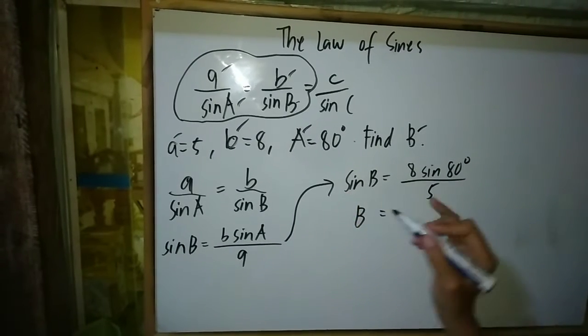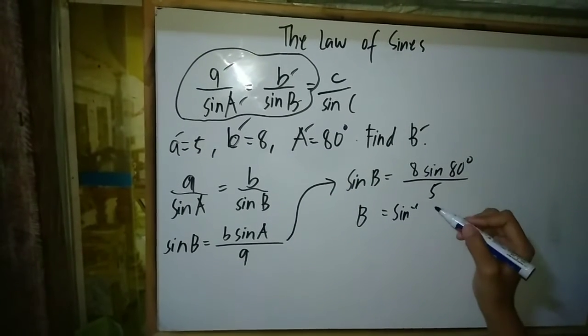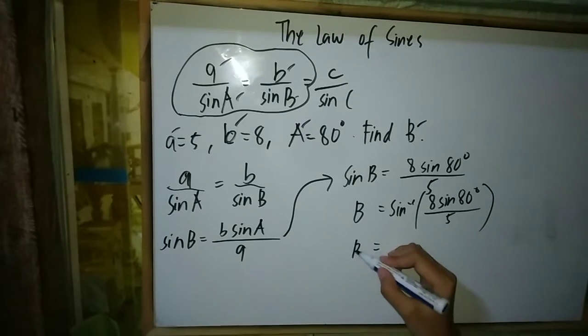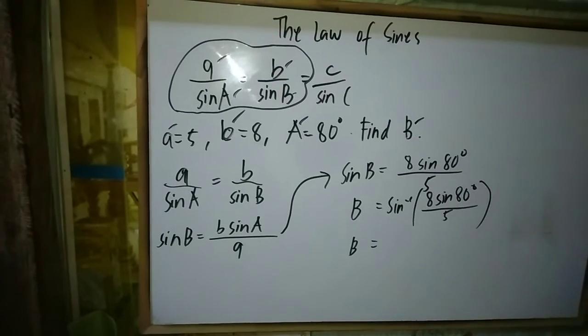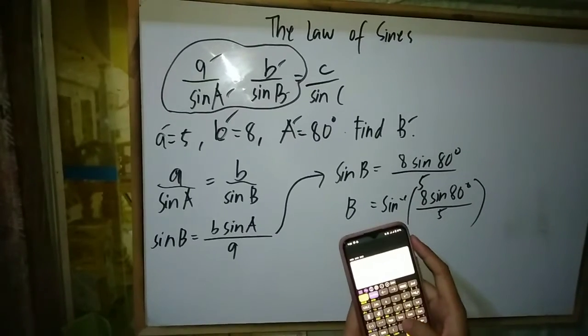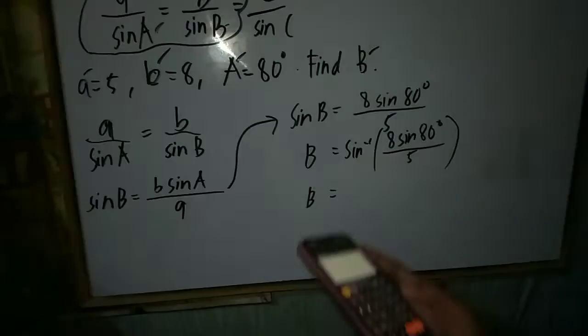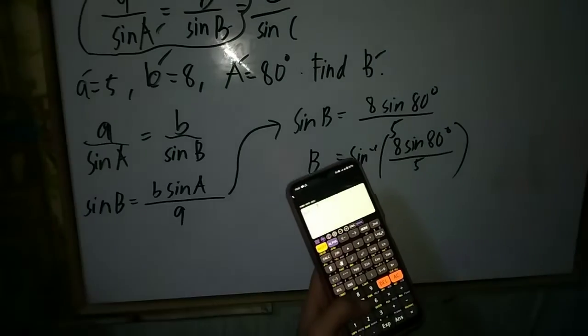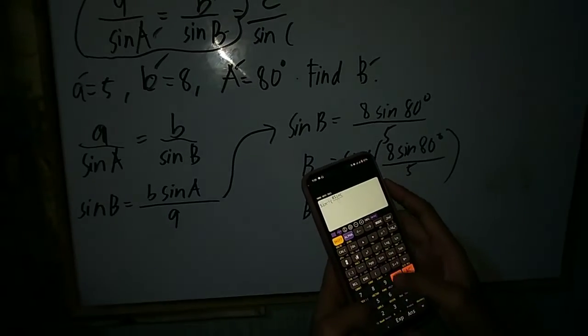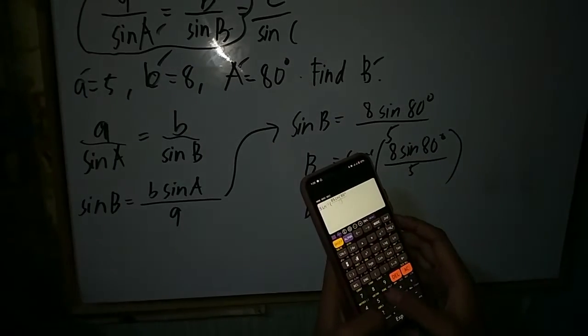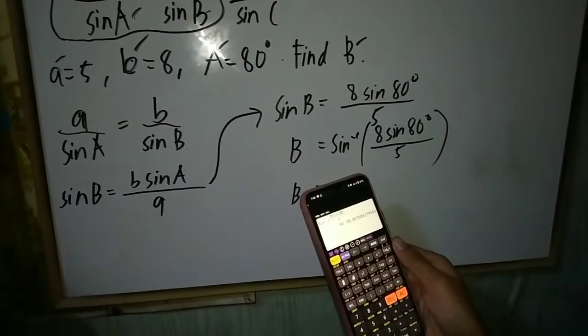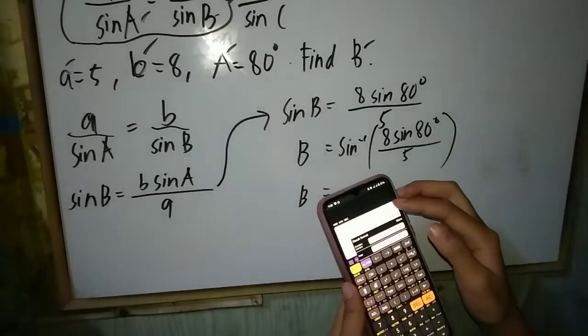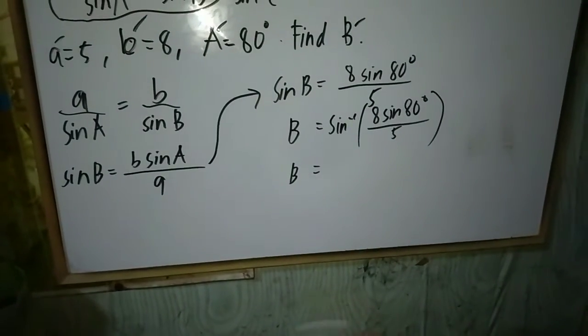Now, we need to use sine inverse. So let's try to solve this using our scientific calculator. Sine inverse—just long press it and it will show sine inverse. And then enter 8, which is our b, then sine 80 degrees, which is our angle A, over 5, which is our a. Now, the answer is 90.